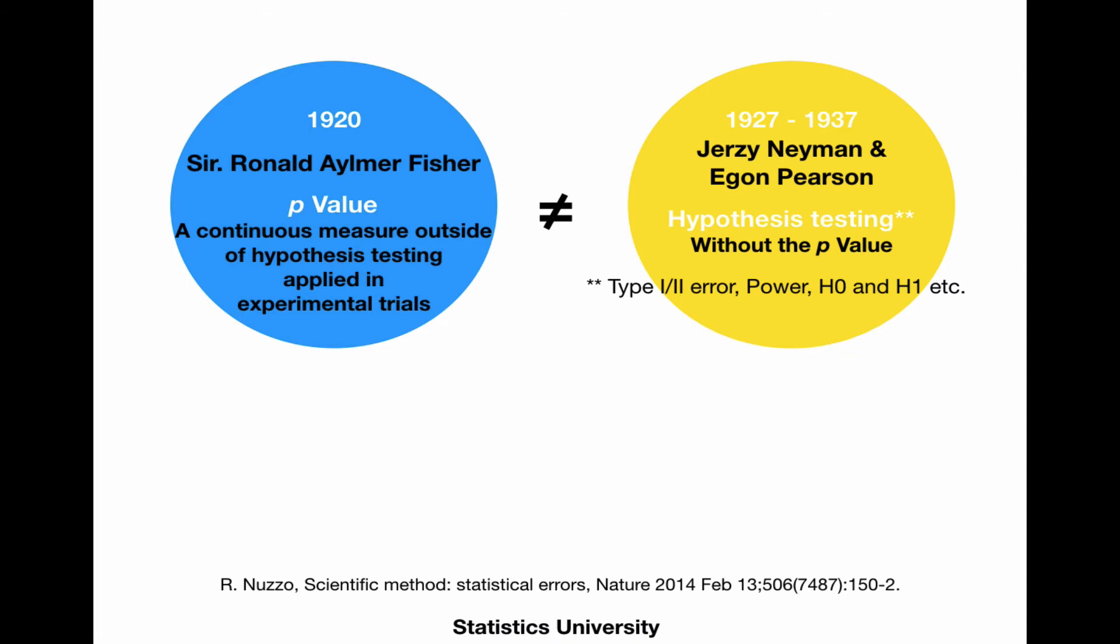Whereas Jerzy Neyman and Egon Pearson worked on the components of hypothesis testing without much emphasis on the p-value. So they established a groundwork for the type 1 and type 2 error, power, the null hypothesis, alternative hypothesis, etc. But these two things aren't quite similar. And somehow over the years, we sort of mixed them together. And that's what we use in medical research nowadays.